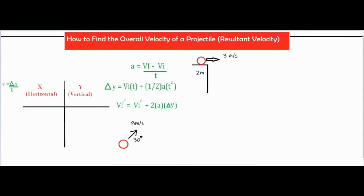Let's solve the first problem since it's a bit simpler. When this object strikes the ground it won't be moving completely vertically or horizontally — it'll be a combination of both, striking at an angle. When you add vectors together you use the tip-to-tail method. It has a horizontal component, and when it strikes the ground it still has that horizontal component of three meters per second, because horizontal velocity stays constant.